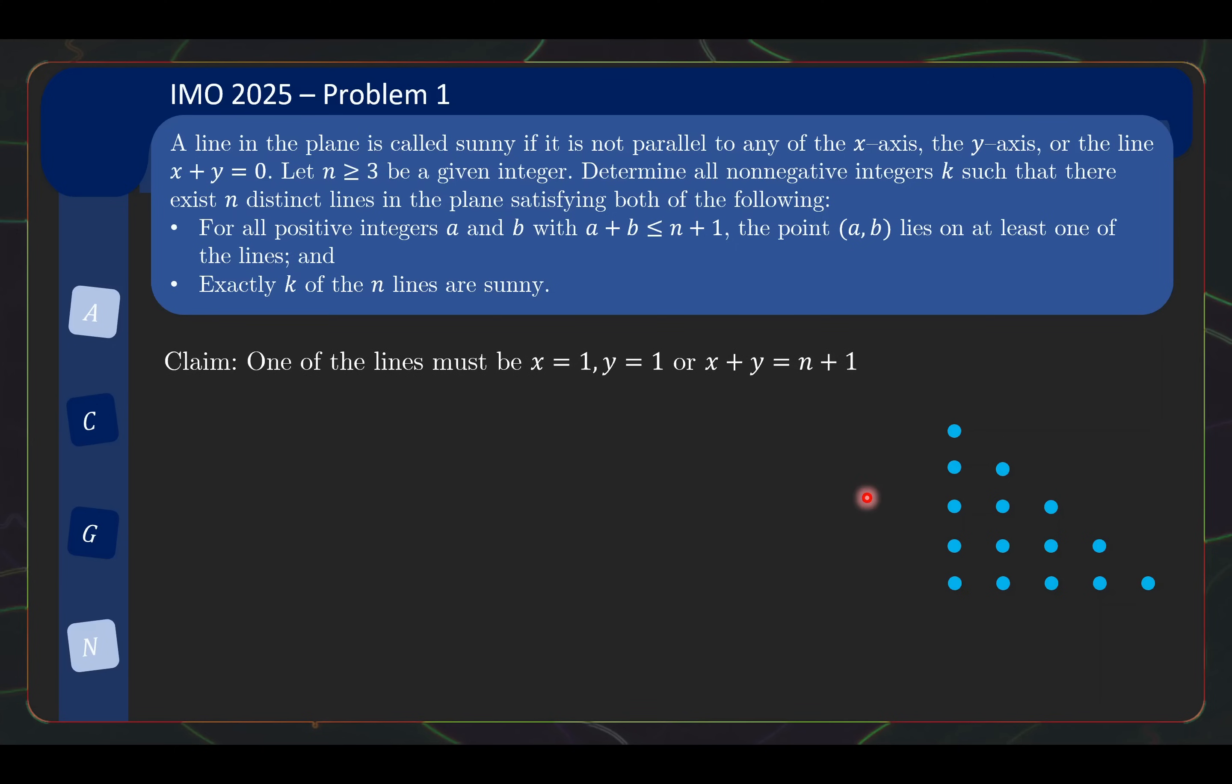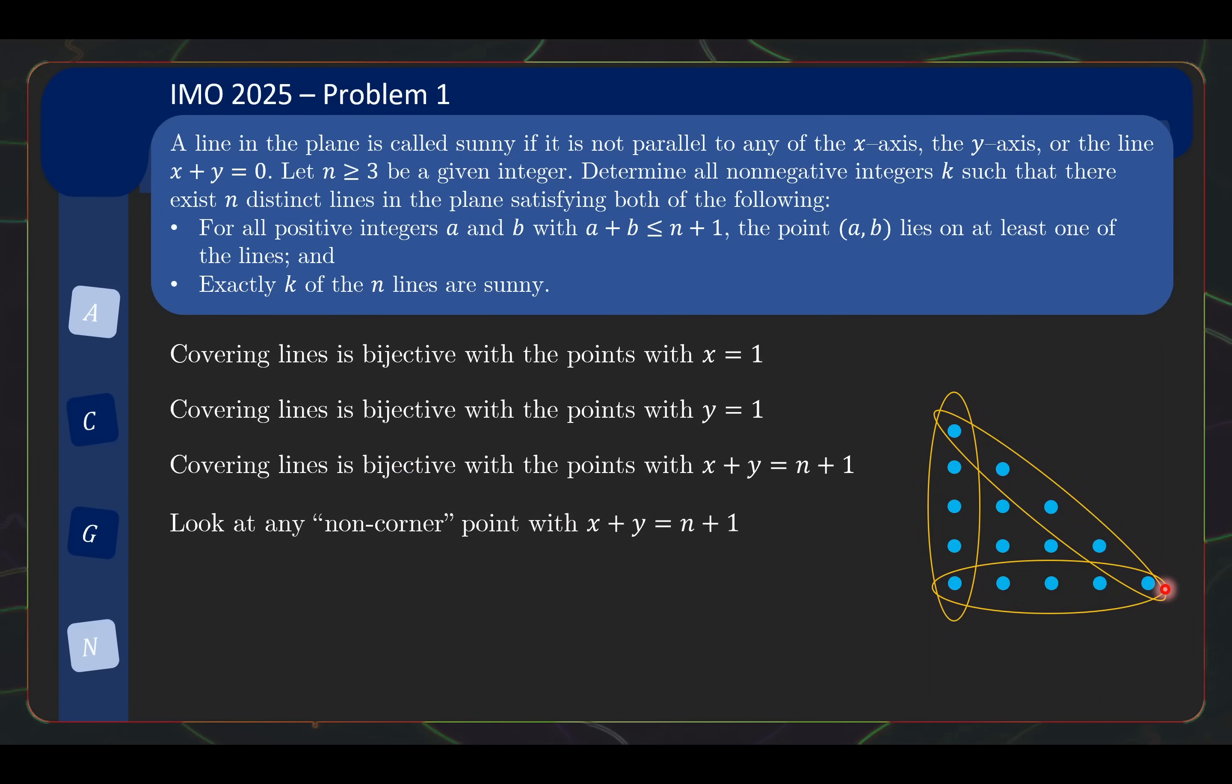So let's prove this claim. We are going to prove by contradiction. So suppose this is not true. Now the fact that the x equals to 1 line is not present means that no two points with x coordinate 1 share the same covering line. Because if they do share a covering line, then that covering line will have been a vertical line which is the x equals 1 line. Now there are n points and my set of covering lines is only n lines. This means that my covering lines must be bijective with the points with x coordinate 1.